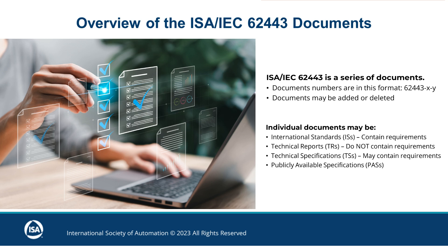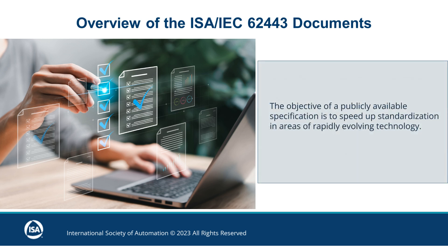The IEC has two additional document types: technical specifications and publicly available specifications. Technical specifications may contain requirements, although, unlike international standards, this is not their primary purpose. The objective of a publicly available specification is to speed up standardization in areas of rapidly evolving technology. These generally respond to an urgent market need and are designed to bring the work of industry forums and consortia into the realm of the IEC.